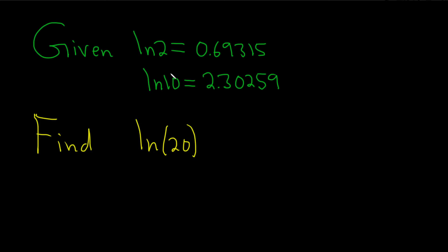We're given values for the natural log of 2 and the natural log of 10, and we're asked to find the natural log of 20. The way to do this is to write it in a way that involves these two.